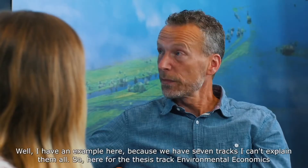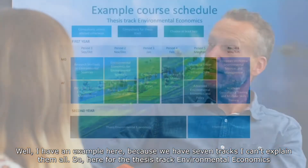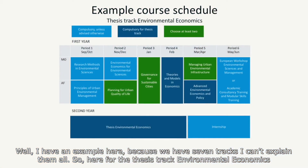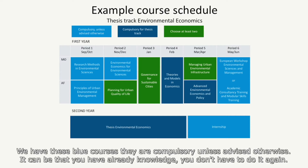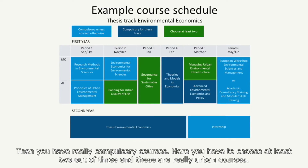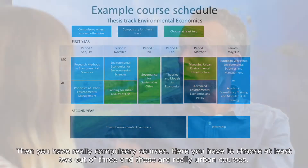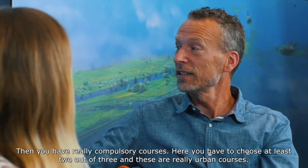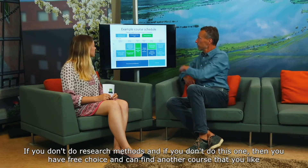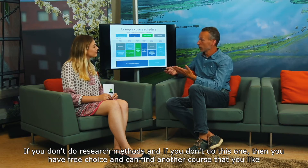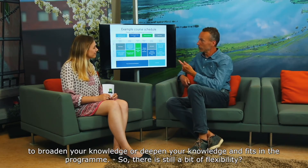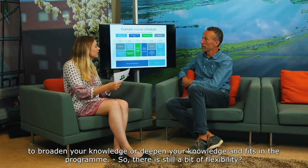And what is the course structure of this program? Well, I have an example here because we have seven tracks and I can't explain them all. For the thesis track of environmental economics, you have these blue courses — they're compulsory unless advised otherwise. It can be that you already have the knowledge and don't have to do it again. Then you have really compulsory track courses. Here you have to choose at least two out of three, and these are really urban courses. If you don't do research methods, you have free choice and can find another course which you like — broadening or deepening your knowledge that fits in the program. So there's still a little bit of flexibility.